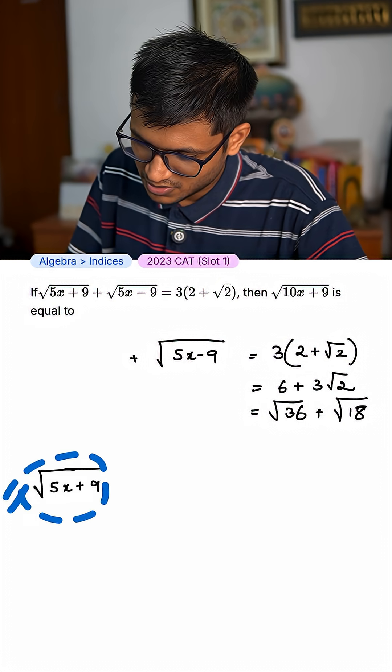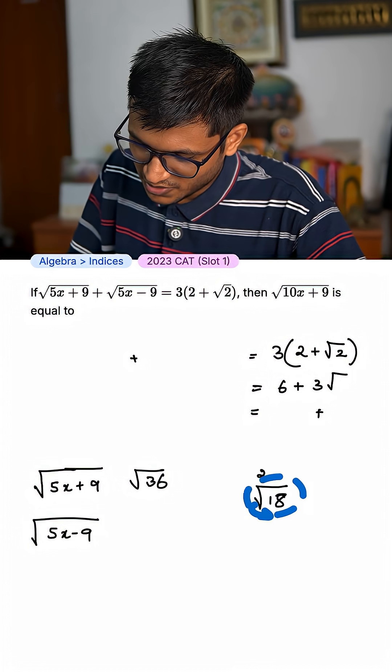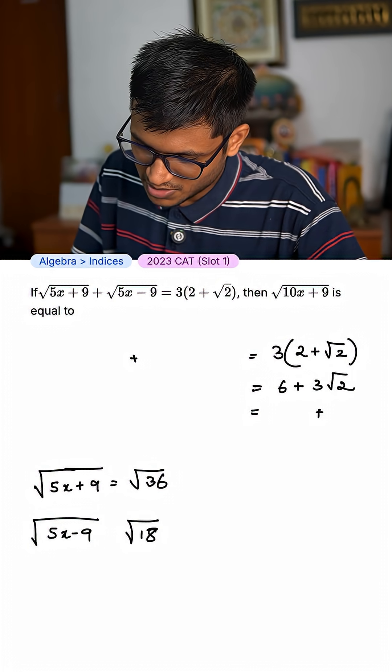Now, can I say that this thing is equal to this thing and this thing is equal to this thing? Now, can I say that these are equal?